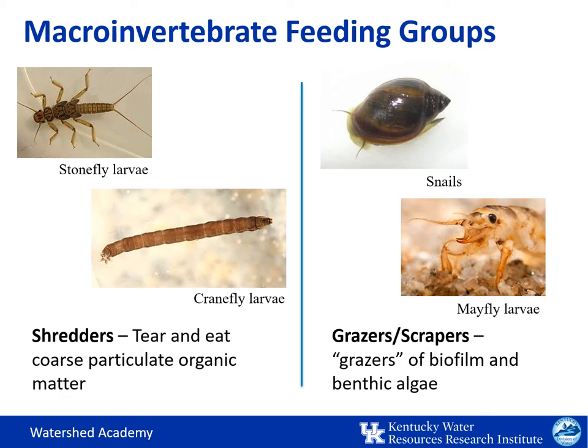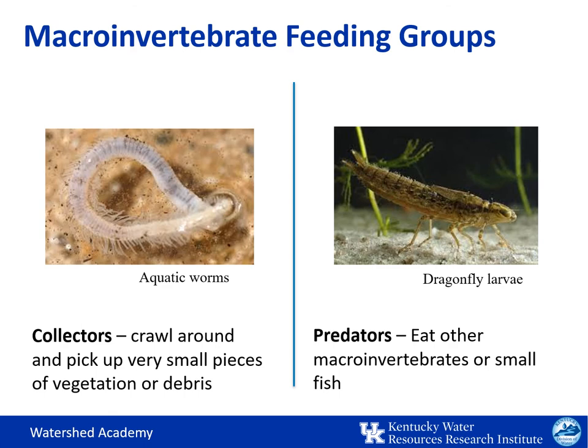There are a variety of ways that macroinvertebrates collect and consume their food and energy resources. Shredders get energy from breaking down leaves and other vegetation — these may include stoneflies, craneflies, caddisfly larvae, and sowbugs. Grazers or scrapers scrape algae and other food sources off rocks in the stream's substrate, such as mayfly larvae or snails. Collectors crawl around and pick up small pieces of vegetation and debris from the bottom, for example beetles or worms. Filtering collectors filter food out of the water column — examples are black fly larvae or net-building caddisflies. Predators eat macroinvertebrates and small fish, with mouthparts specifically adapted to feed on prey, such as dragonfly or damselfly larvae with scoop-like lower jaws.